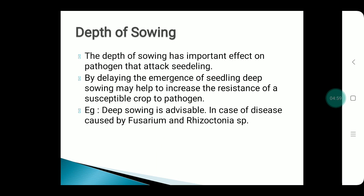Depth of sowing: increased depth of sowing helps to delay seedling emergence, which increases the resistance of the crop to pathogens. For example, deep sowing is advisable in cases of disease caused by Fusarium and Rhizoctonia species.